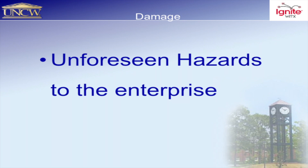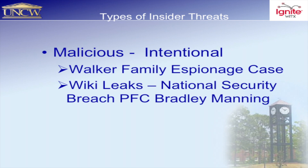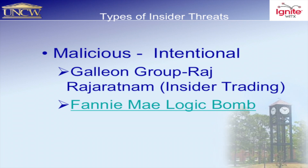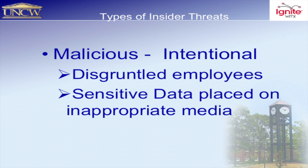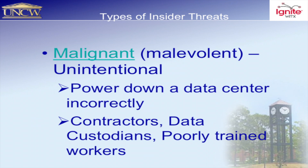These are some examples of malicious threats. The Walker case — John Walker was a petty officer who, during the Cold War, helped the Russians hack into our environment. We have the Galleon Group, where the CEO was doing insider trading. We have logic bombs, as in the case with Fannie Mae. Malicious threats can be intentional, like a disgruntled employee planting a logic bomb, or sensitive data placed on inappropriate media. Unintentional threats include data on flash drives in Afghanistan, where soldiers were selling them in local markets — a threat to operational security.